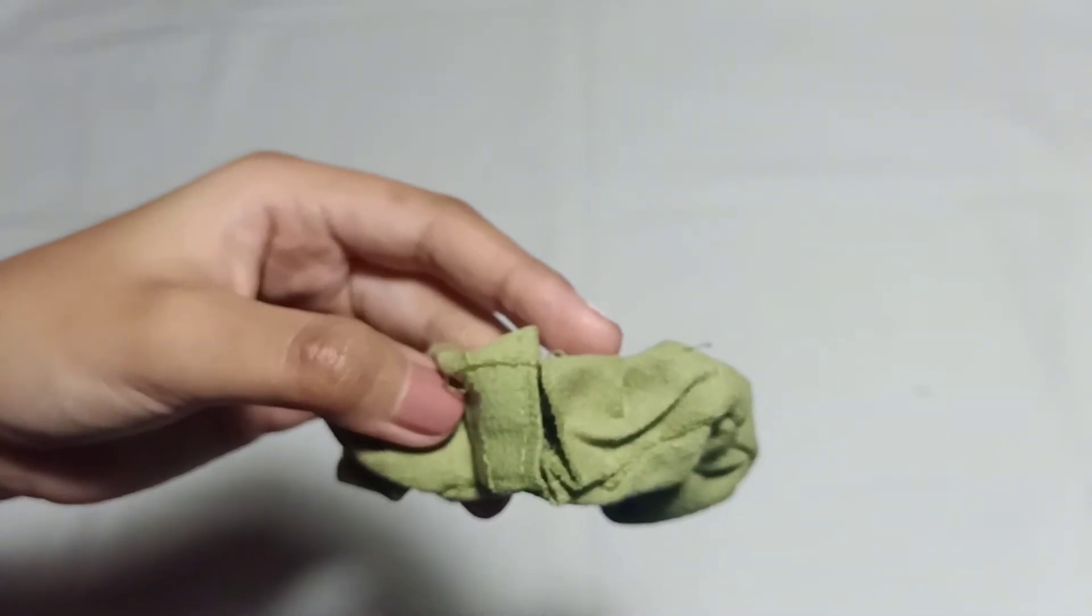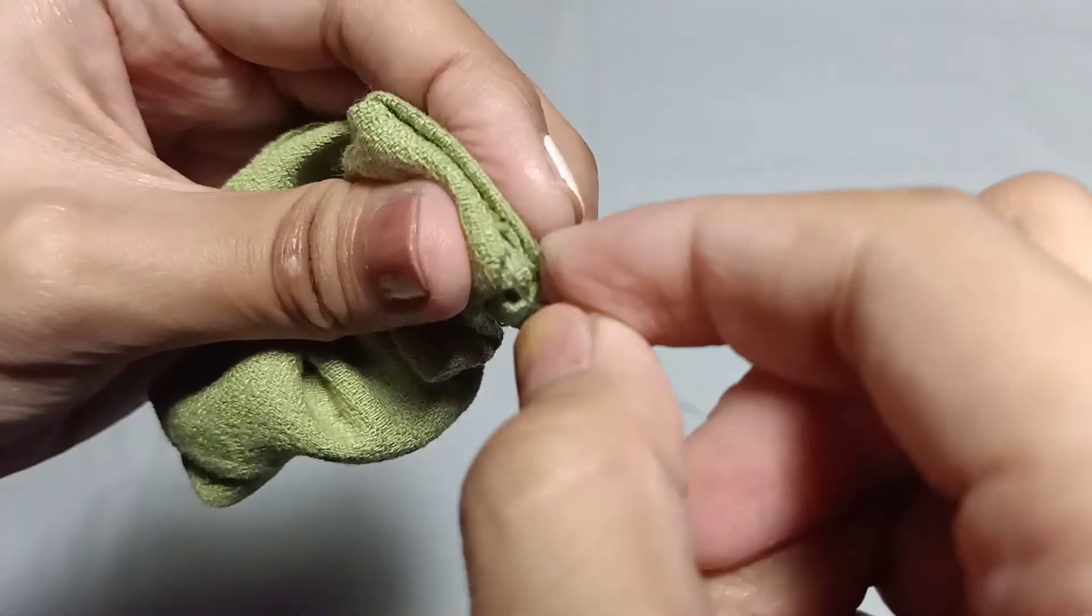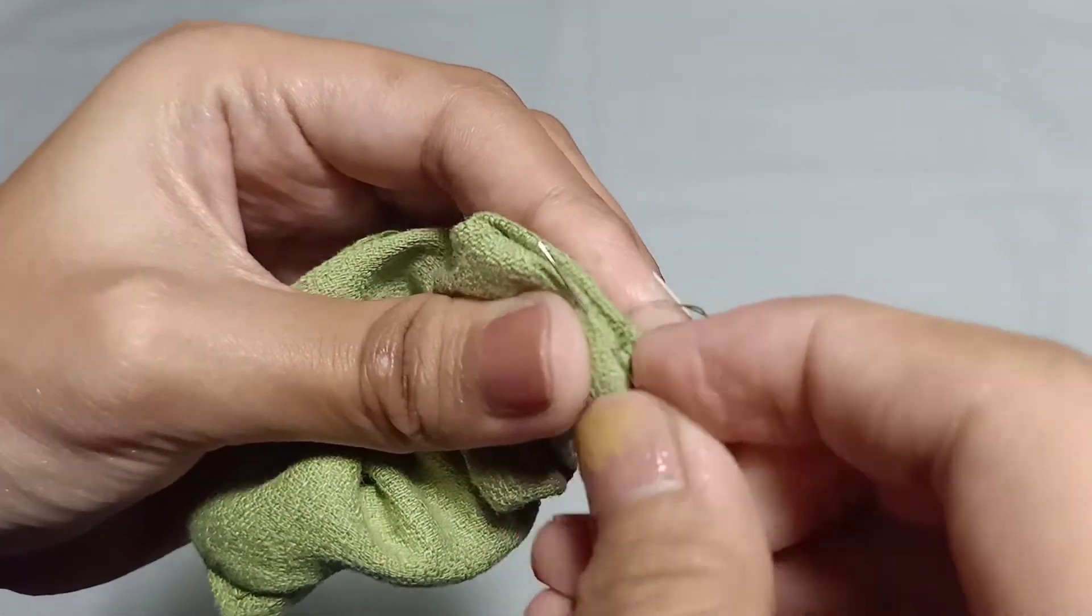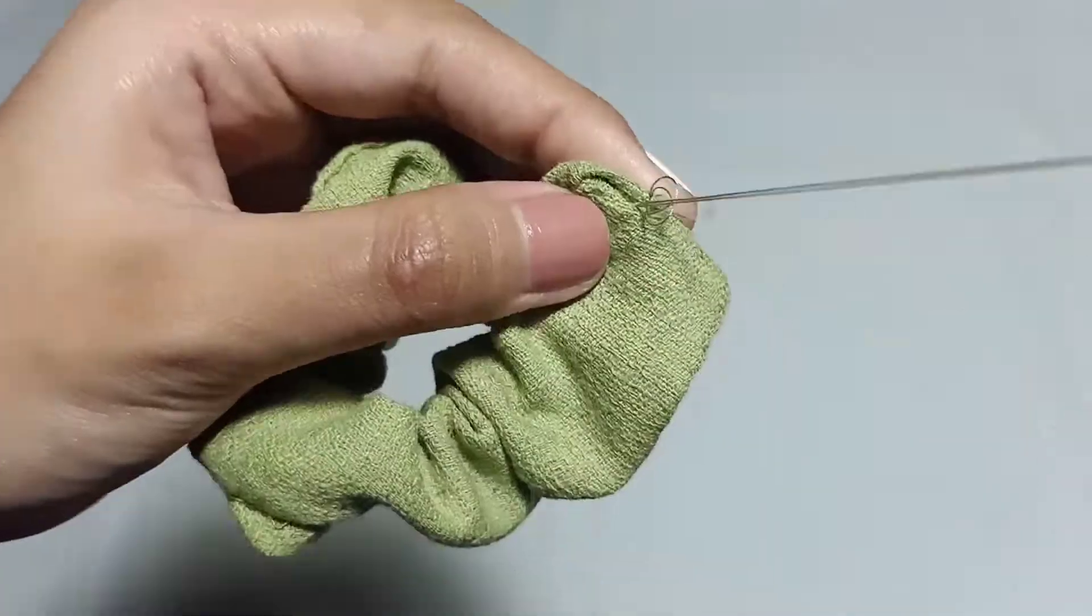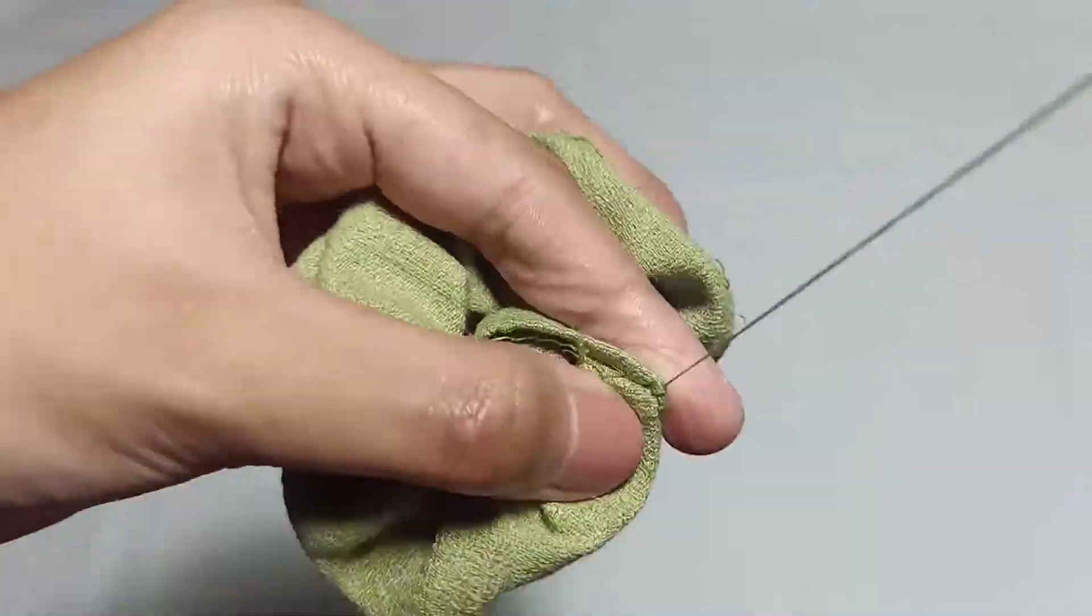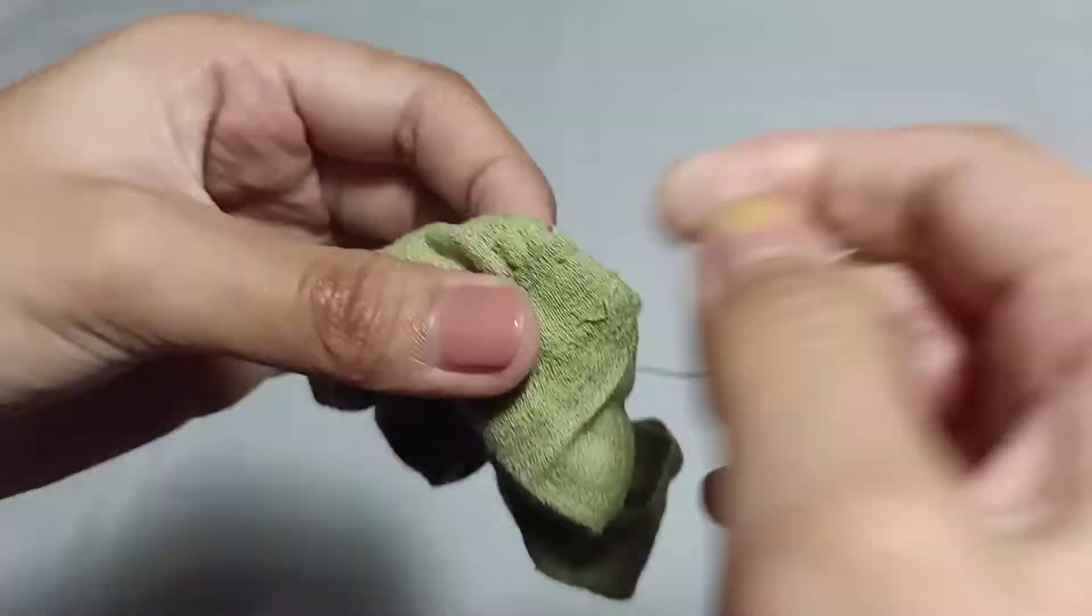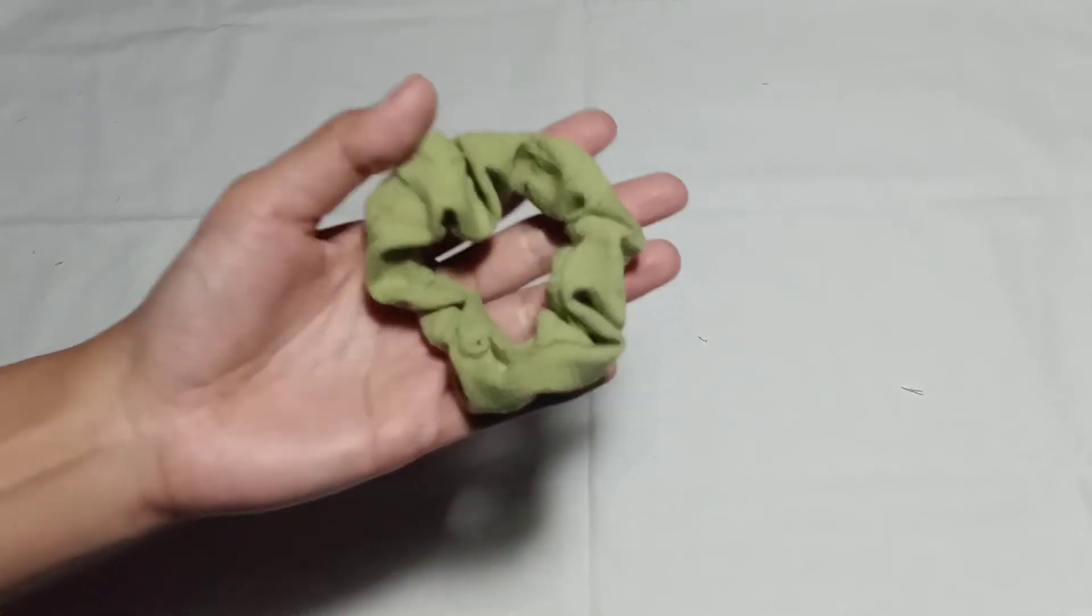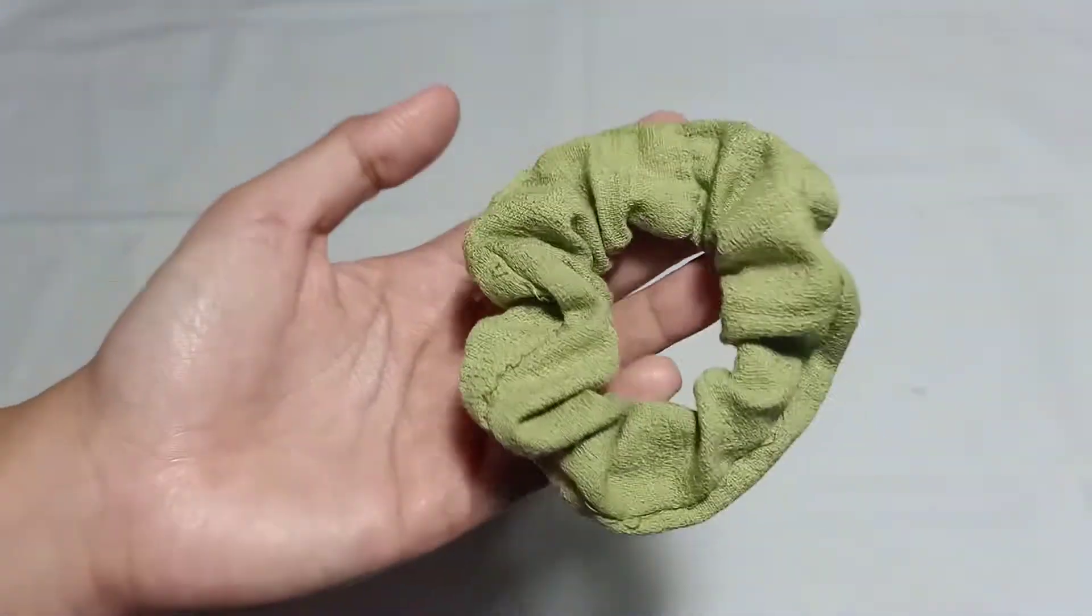After sewing the elastic, close that part using a ladder stitch. For those who don't know how to do ladder stitch, I'll put the tutorial in the description box or i-button. That's how easy it is to make a scrunchie. That was our last step. Now let me model this scrunchie.